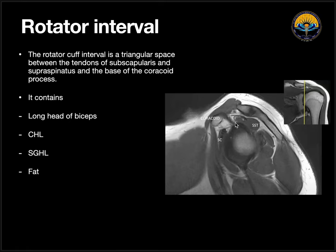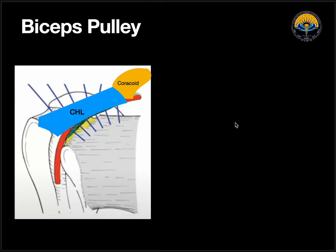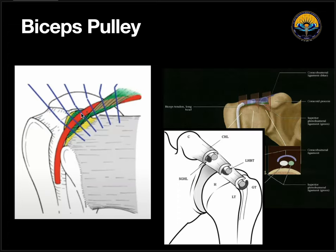Coming to the biceps pulley system: from coracoid to humerus, we will have a coracohumeral ligament. If we remove this, we will see the biceps going under it, and surrounding it, we will see the superior glenohumeral ligament. Looking at this diagram carefully, on the medial aspect, the superior glenohumeral ligament is parallel to the biceps tendon, but as it goes laterally, the superior glenohumeral ligament goes inferior to the biceps tendon, forming a pulley-type configuration.